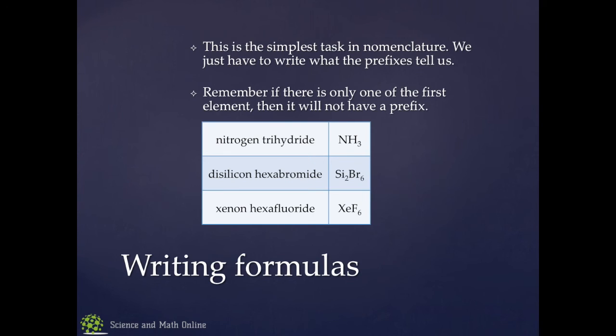That is the basis of just doing names and formulas with covalent compounds. It is relatively straightforward, pretty simple. You need to memorize your prefixes, and you need to remember that if there's only one of the first element, it doesn't have a prefix. And then you've got to end in IDE. So those three things are the things that tell you how to do covalent formulas.